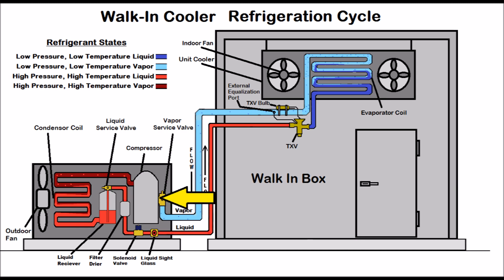You have low pressure low temperature vapor heading into the compressor. The compressor is located in the outdoor unit, which is the condensing unit. Low pressure low temperature vapor goes through the vapor service valve into the compressor — you should have vapor only heading into that compressor. Then you have high pressure high temperature discharge vapor gas coming out of the compressor. The compressor takes low pressure, compresses it into high pressure, and since it's high pressure it's therefore high temperature. Temperature follows pressure, and where it comes out of the compressor that's called the discharge line.